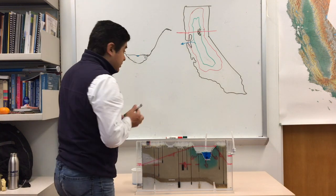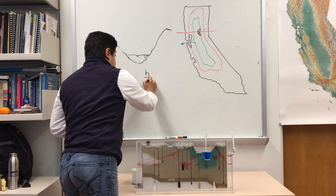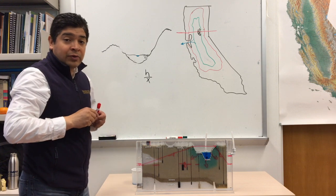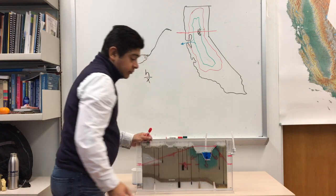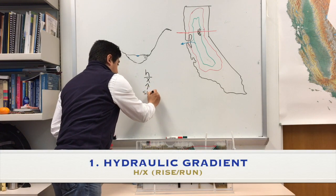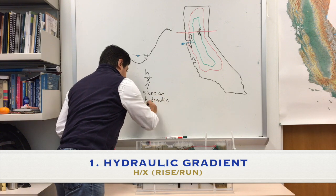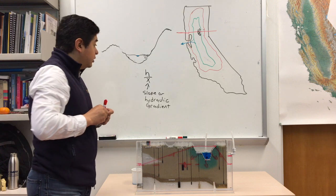For this case, what we have as a gradient is the rise over the run, the rise over the run. This is called slope or hydraulic gradient.